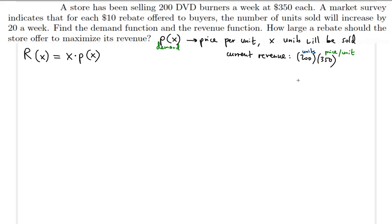Now we need to talk about what to add or subtract from the current revenue, because the revenue should be a variable depending on the X value. P of X will also depend on X. We have to find the demand function by using the information regarding the rebate.